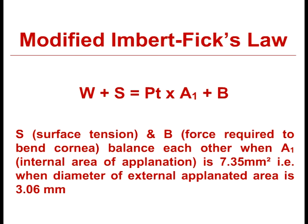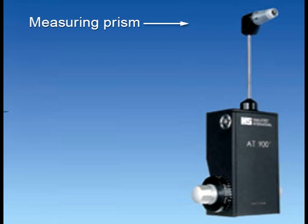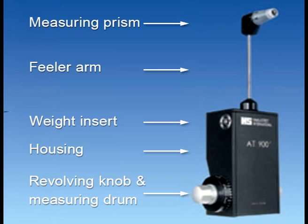At this stage, the law becomes applicable. The Goldman aplanation tonometer consists of 5 parts: the measuring prism, feeler arm, control weight insert, housing, and revolving knob with measuring drum. Different models are available for different types of slit lamps.